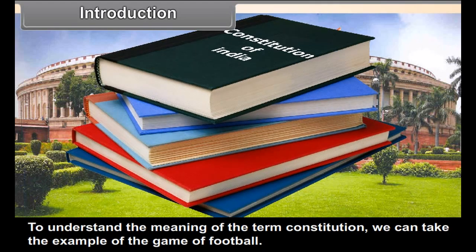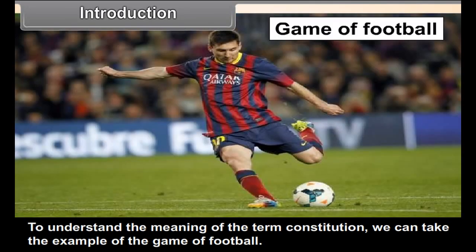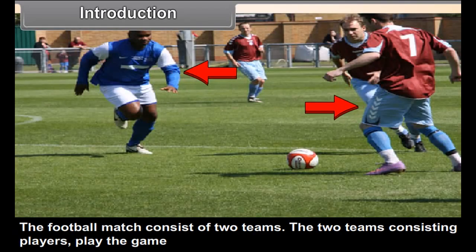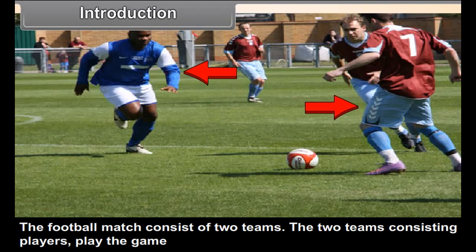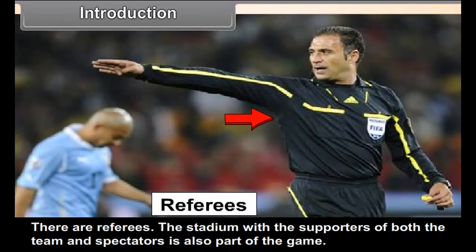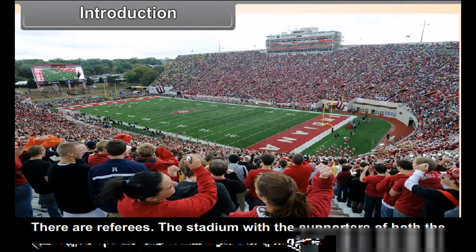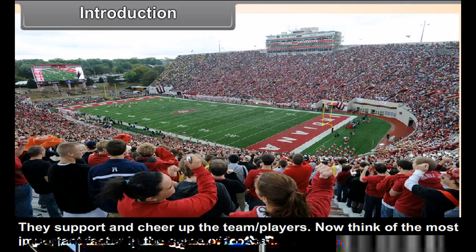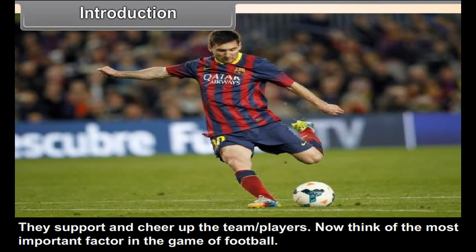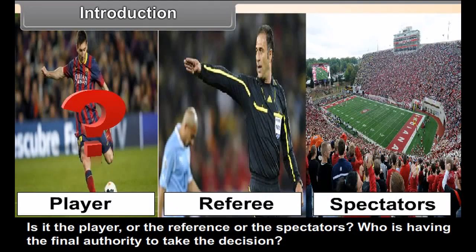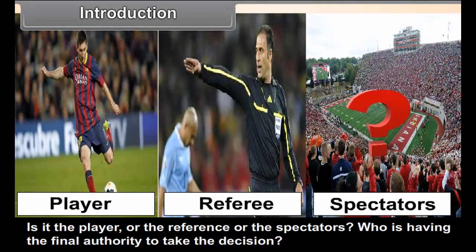Introduction. To understand the meaning of the term Constitution, we can take the example of the game of football. A football match consists of two teams of players, referees, and a stadium with supporters and spectators who cheer for the teams. Now, think of the most important factor in the game of football — is it the player, the referee, or the spectators? Who has the final authority to take a decision?